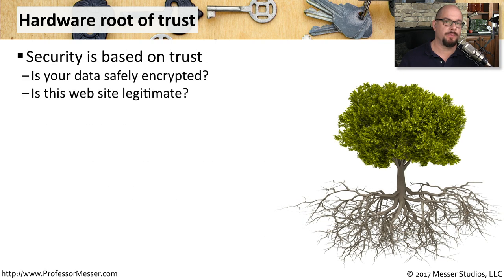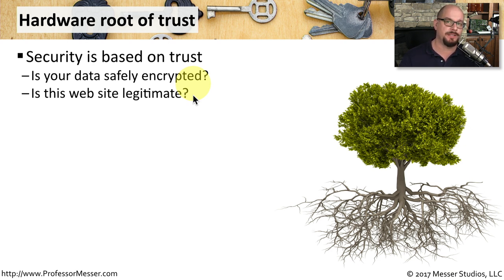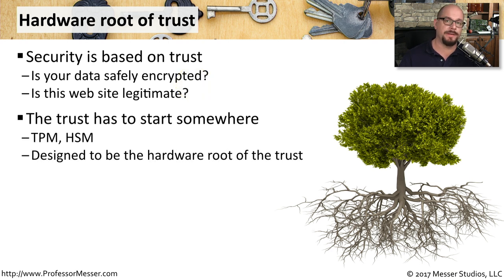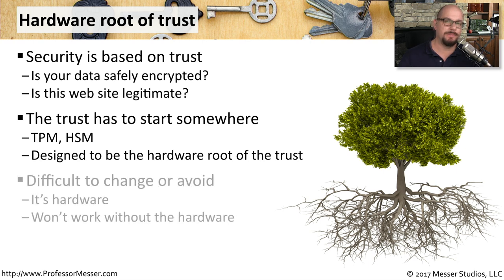Most aspects of information security are based on trust. When we set up encryption to and from a device, we're trusting that that data is going to be properly encrypted. When we connect to a website over a secure connection, we want to know that the website we're connecting to is the legitimate site and not one posing as something else. In this video, we've already seen a couple of examples of a hardware root of trust — hardware that all of our security relies upon. Trusted platform modules and hardware security modules are two good examples of hardware devices used as the basis of our trust.